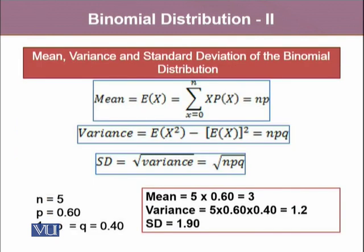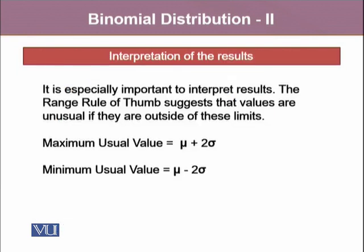There are certain mean, variance, and standard deviations of the binomial probability distribution. The mean of the binomial distribution is NP. Variance is NPQ, and the standard deviation is the square root of the variance, which is the square root of NPQ. For our example, the mean turned out to be 3, the variance turned out to be 1.2, and the standard deviation turned out to be 1.90. It is especially important to interpret the result.